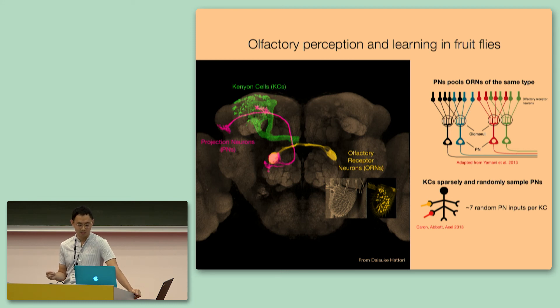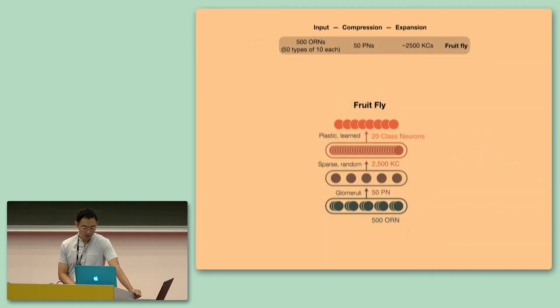There are seven random inputs innervating every single Kenyan cell. And this is sort of similar to us knowing the entire connectivity of the higher visual system. The fact that we know this about olfaction is because the olfactory circuit is remarkably compact and simple to characterize. And this can be nicely summarized as a three-layer feed-forward system composed of 500 olfactory receptor neurons in the first layer that express 10 duplicates of 50 ORN types. They then project to innervate 50 PNs and then expand onto 2500 Kenyan cells. And, moreover, the flies learn to associate odors with unique outcomes because the final layer of connections are modified during learning.